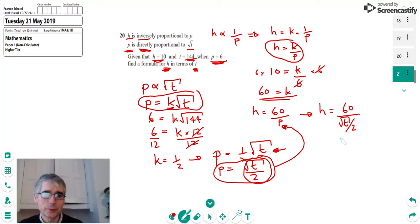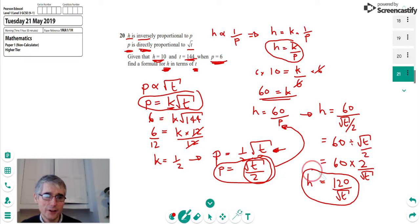So we've done it there. We can tidy that up a little bit further because a fraction means the top divided by the bottom. So we can say that would be 60 divided by root T over 2. And if we divide by a fraction, the method is actually to change the divide into a times and then flip the fraction. So we turn it upside down and we get 2 over root T. And then we can multiply the 60 by the 2. We can say 60 times 2 is 120. And it's still over root T. So there we've got it. H is equal to 120 over root T.